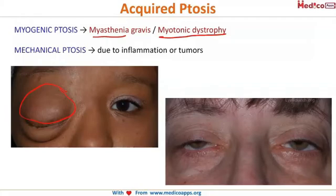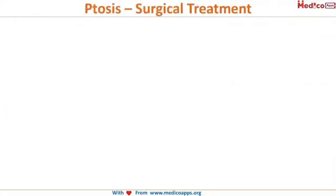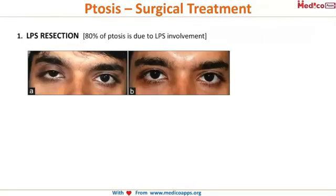Now let's look at the treatment of ptosis. Various surgeries are available depending on the amount of ptosis. The first is LPS resection. Since 80% of ptosis cases are due to LPS involvement, LPS resection is the first choice of management. After this surgery, both eyelids are at the same level.